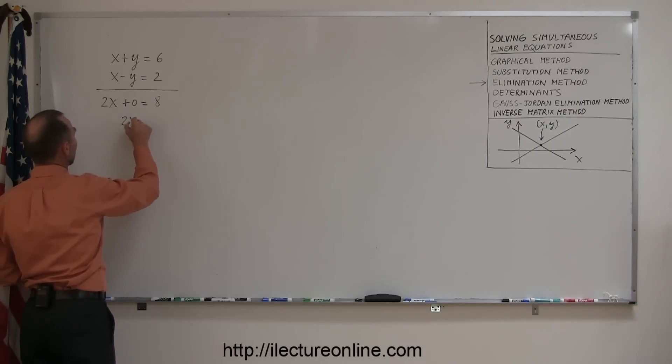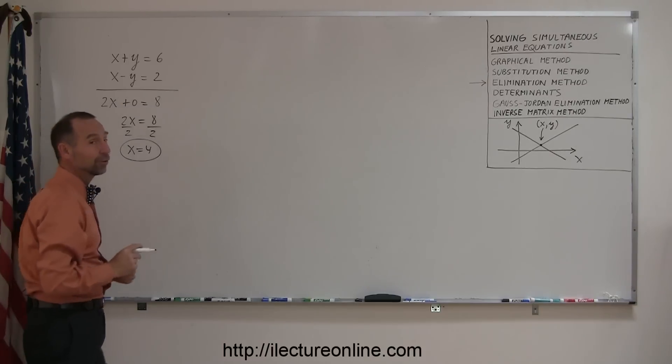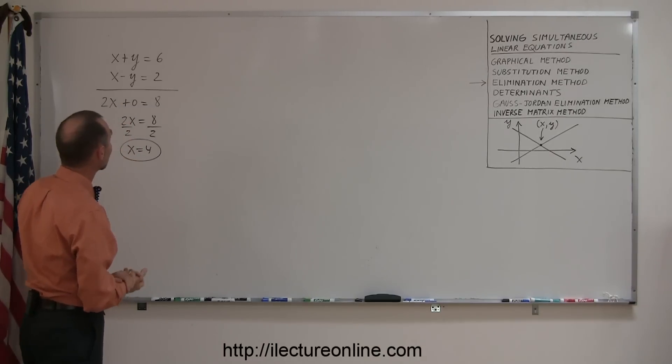This gives me 2x is equal to eight. Divide both sides by two, and I get x equals four. So you can see that very easily you can solve these equations by eliminating one of the variables.